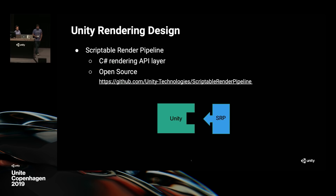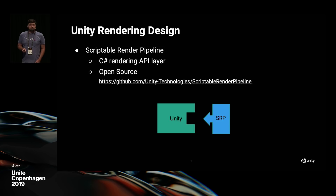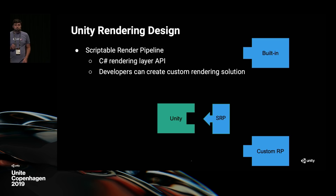Over the past couple of years, Unity transitioned to a new rendering design. I like to think of this as a programmable engine. Similar to how GPUs allow programming the graphics pipeline, Unity today allows developers to program large parts of its rendering pipeline. We did this by exposing a C-sharp rendering API layer — we call this the Scriptable Render Pipeline — which is open source and available on GitHub.